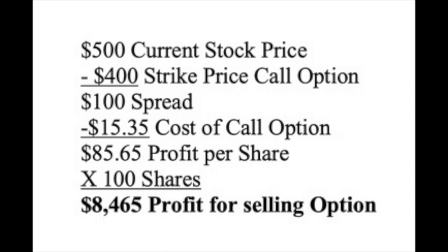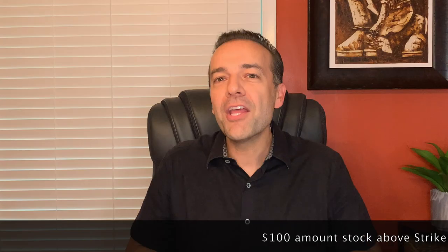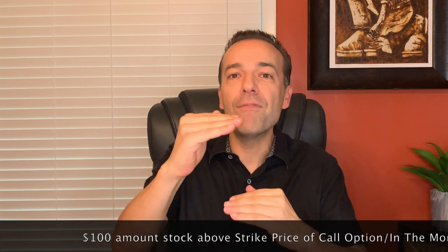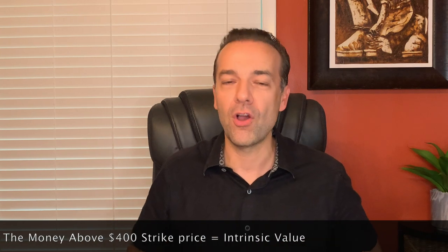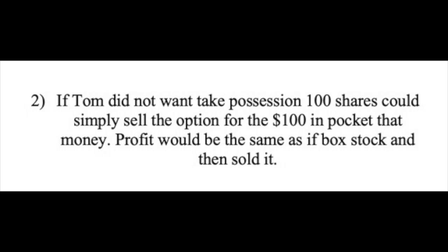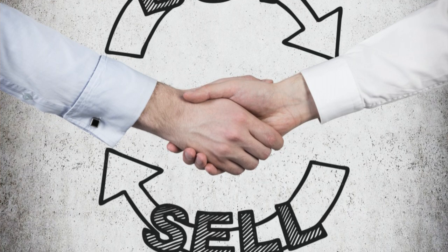That $100 per share — the amount the stock price is above the strike price of the call — is called the intrinsic value of the option, or how much the option is 'in the money.' If Tom did not want to take possession of those 100 shares of Apple stock, he could simply sell the option for $100 per share, or $10,000 total. His profit would be the difference between the $10,000 the option is worth now and the $1,535 it cost him to buy it — a profit of $8,465. As you can see, there are two sides to every option trade: a buyer and a seller, and as option traders we can be either one.